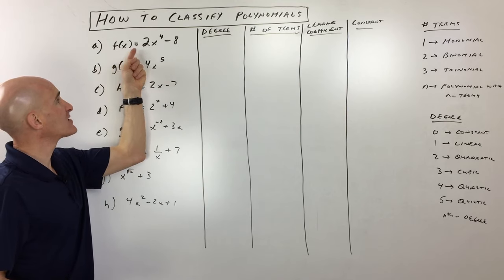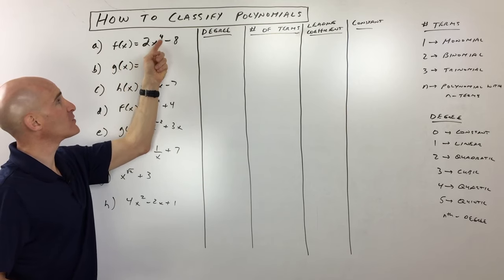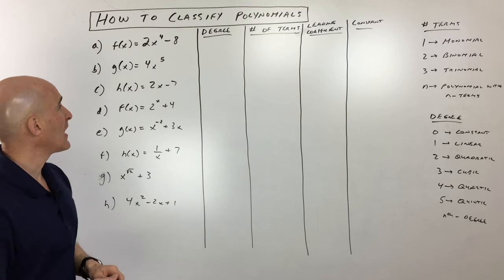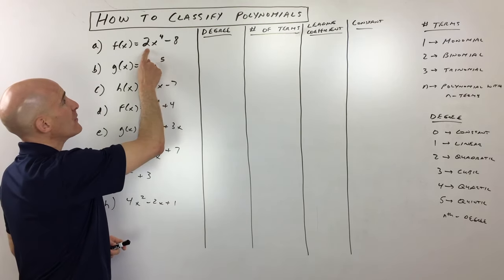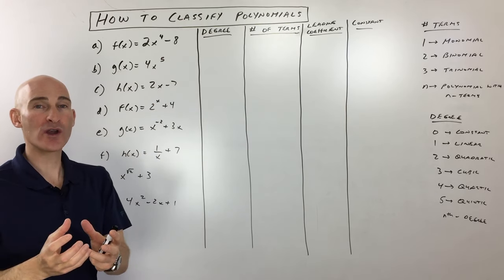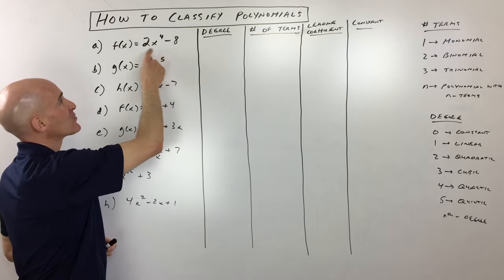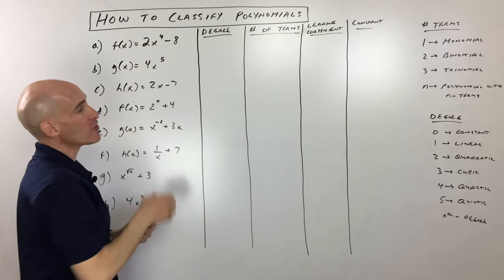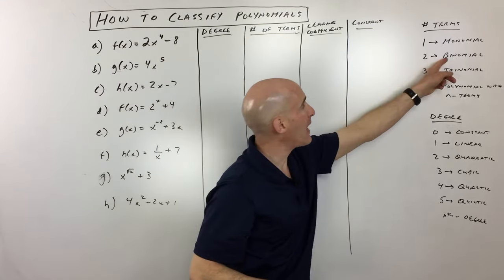So this first one, f(x) equals 2x to the fourth minus 8. What we want to take a look at is that this is a difference of two monomials. A monomial is just one term, and they're separated by plus or minus. Those are the separate terms there. Because this has two terms, we call this a binomial.